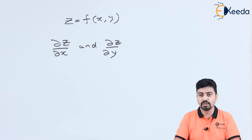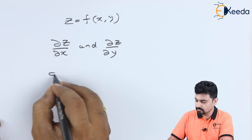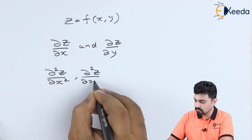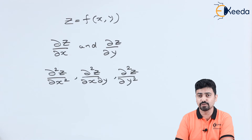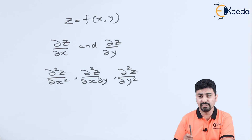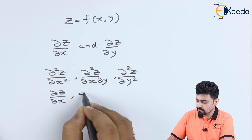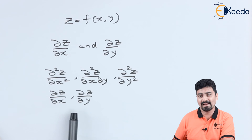A second order partial differential equation will involve second order partial derivatives of z, and it will also involve first order partial derivatives of z. The second order partial derivatives of z are del square z by del x square, del square z by del x del y, and del square z by del y square. It will also involve first order partial derivatives del z by del x and del z by del y.